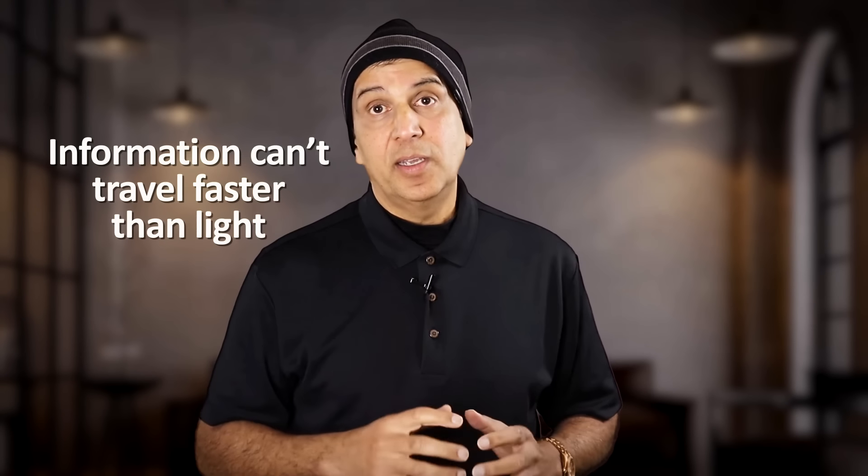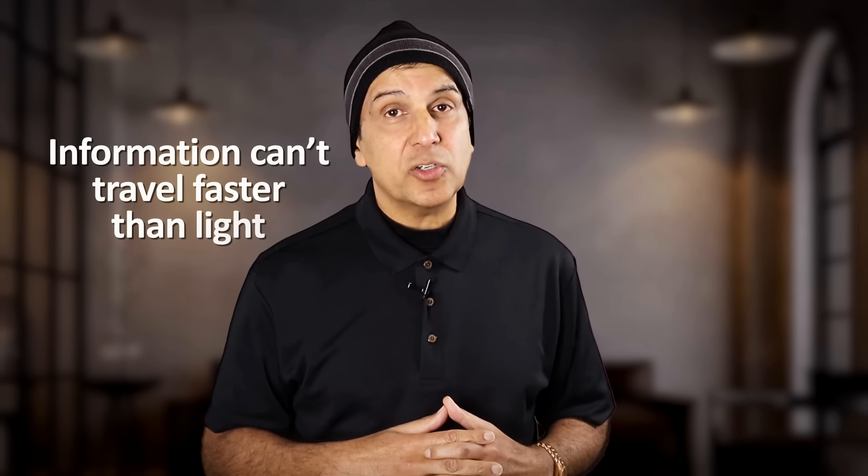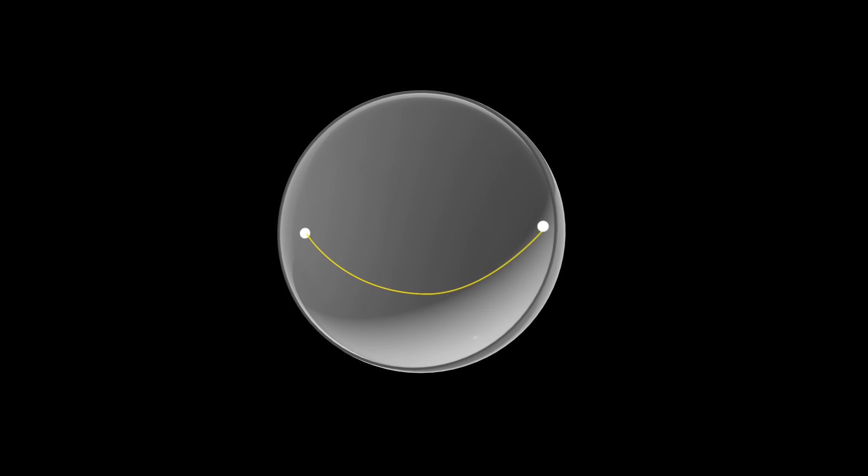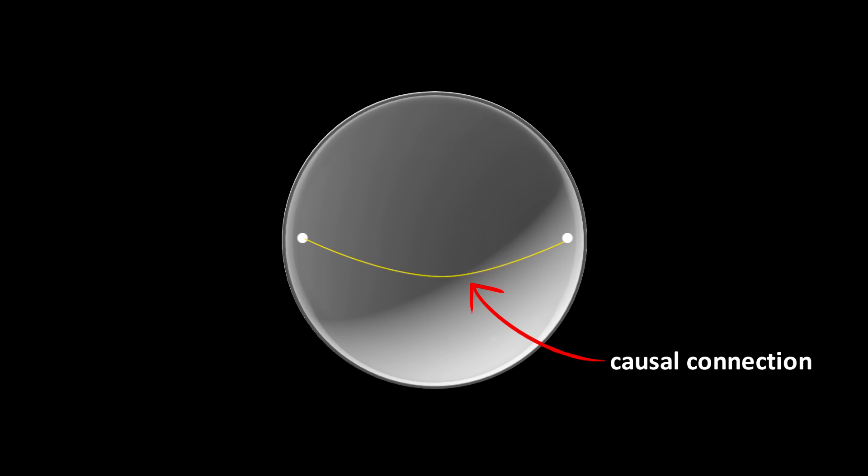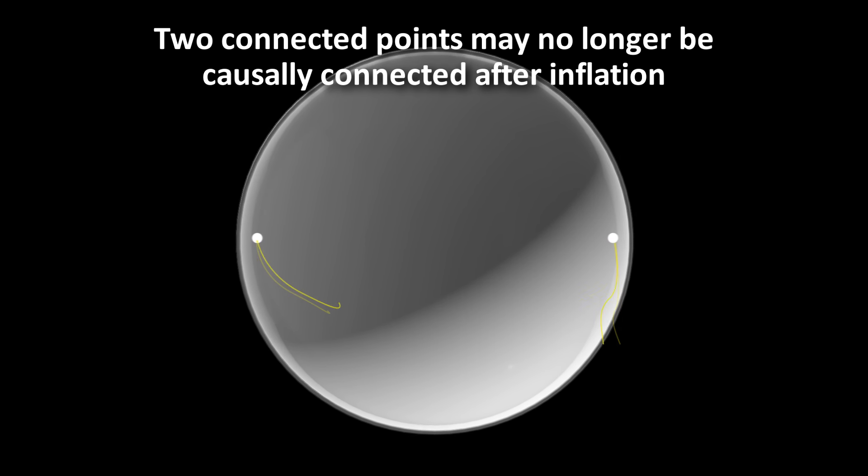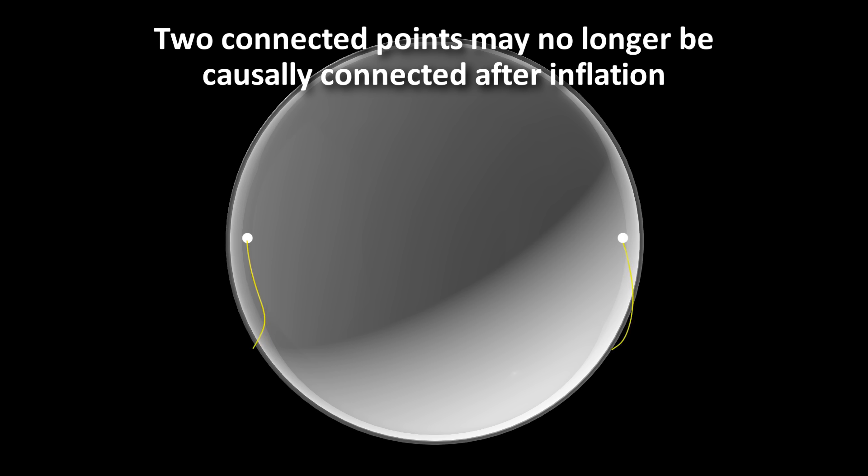You might say, but I thought you can't break the speed of light. But actually you can. What Einstein found is that information can't be transferred faster than the speed of light. This ensures that you always have a cause and effect. Causality is preserved. But because cosmic inflation occurred faster than the speed of light, it means that two points in space that could affect each other before inflation, in other words two points that were causally connected, might not be causally connected after inflation since they moved apart faster than light.